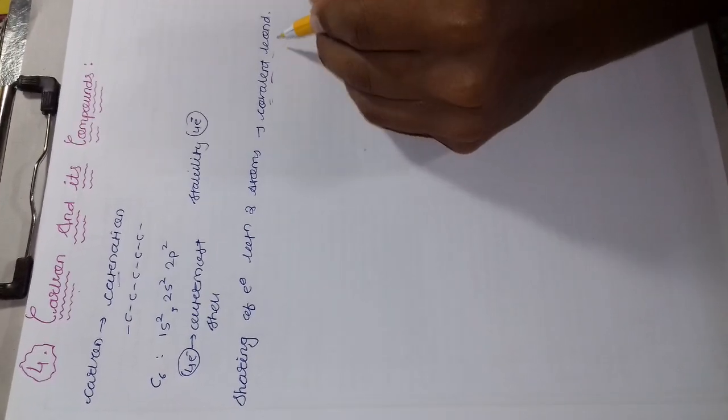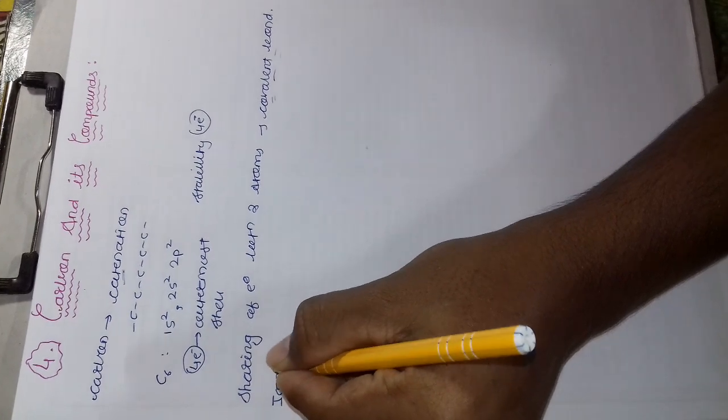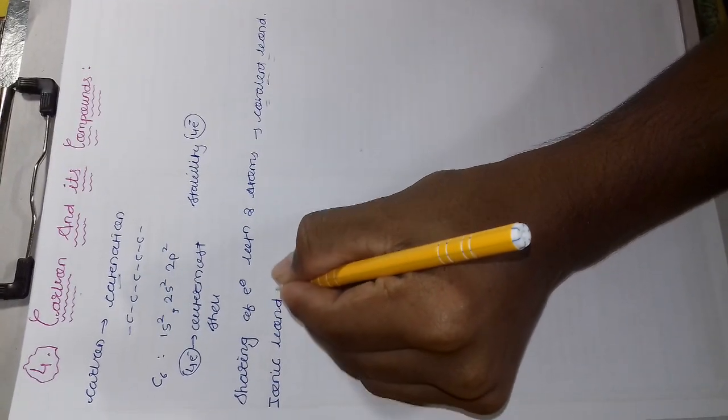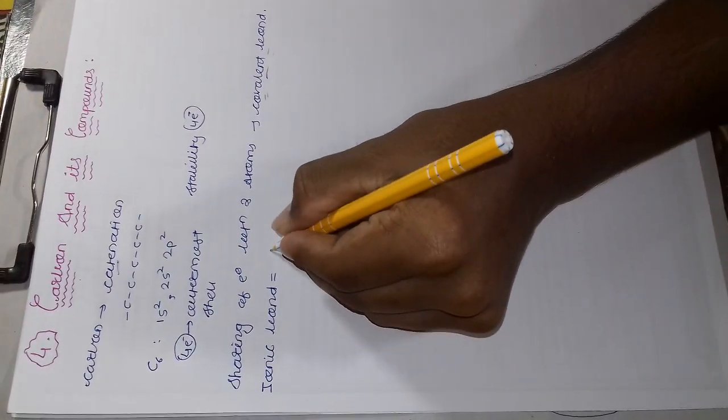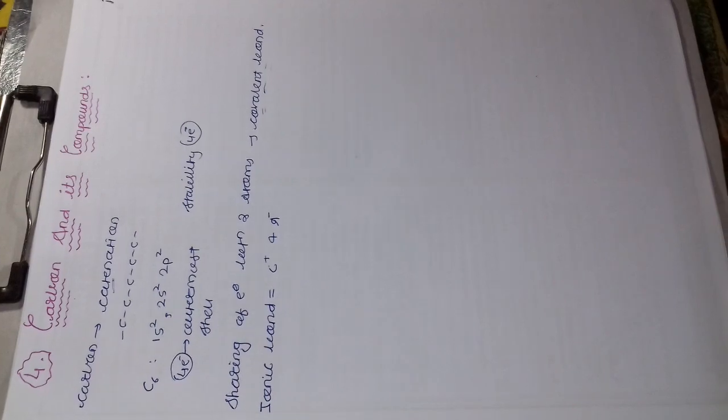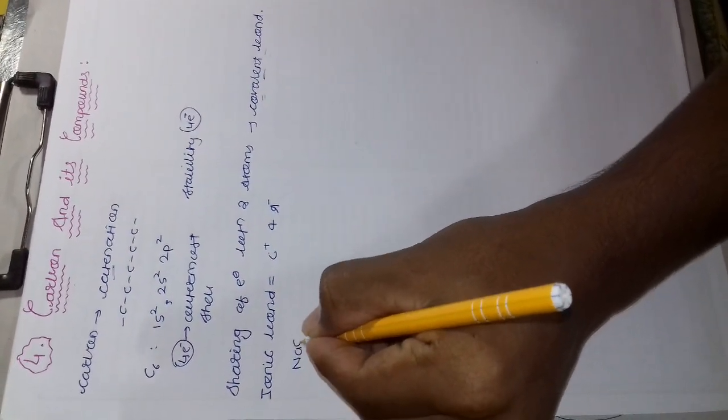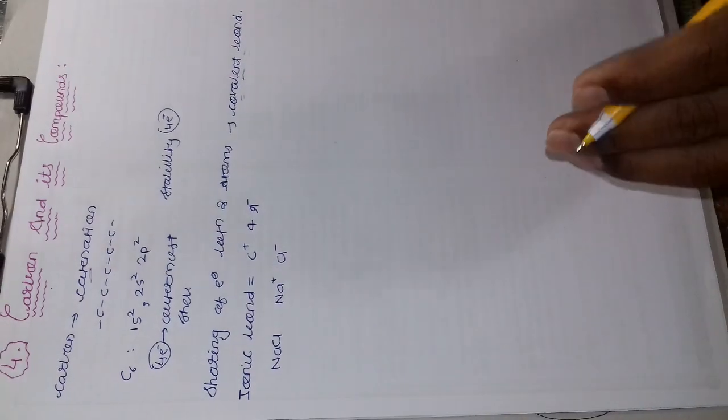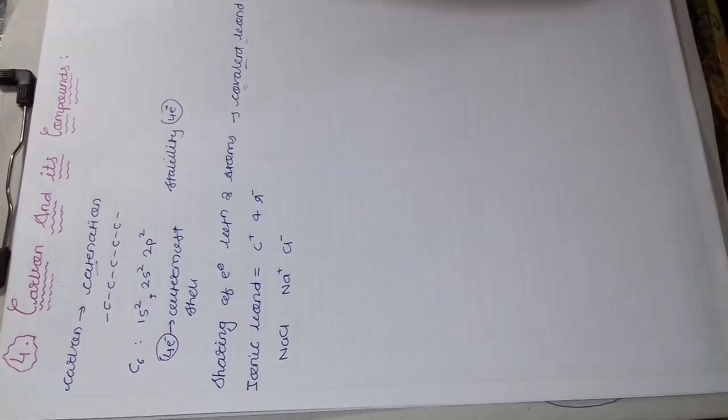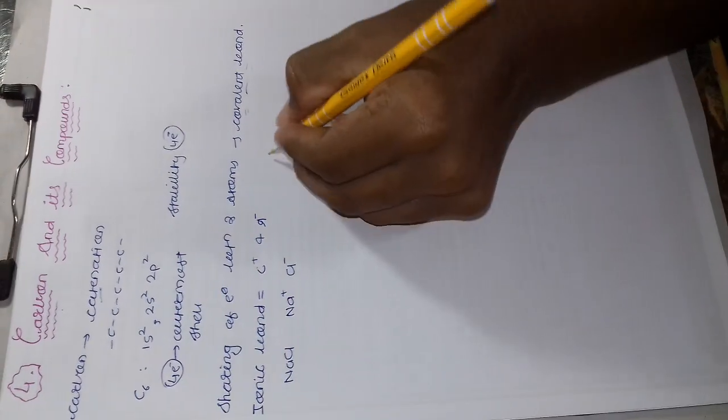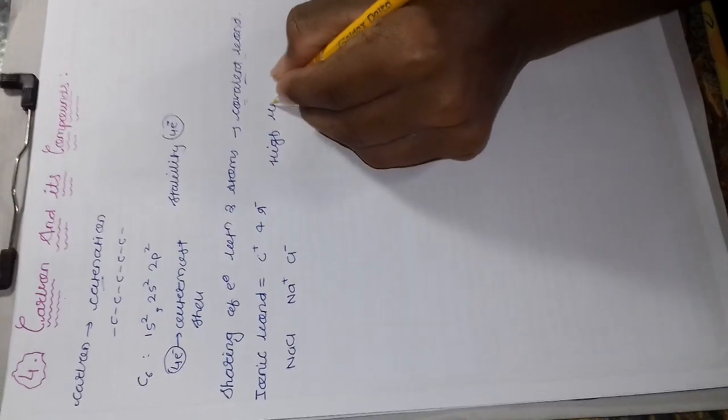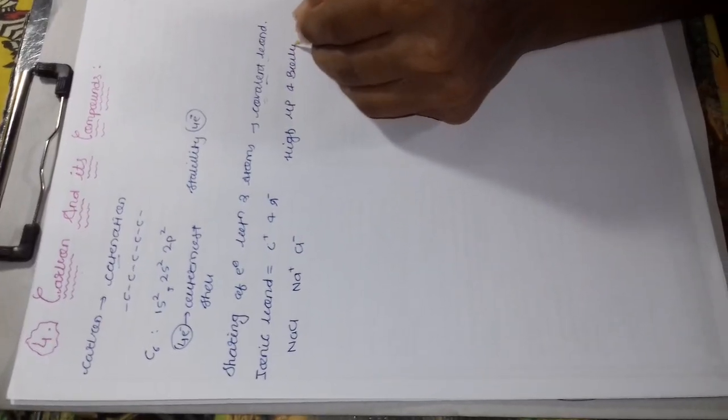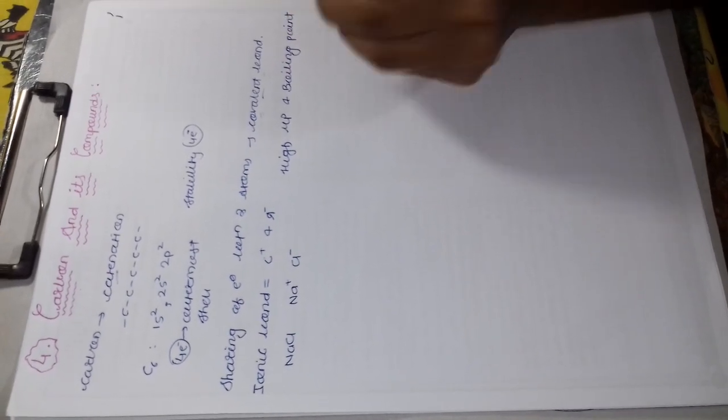With this covalent bond, our topic also includes ionic bond. The ionic bonds are formed by ions, positive cations and negative anions. The best example of ionic bonds would be NaCl, which is formed by Na plus sodium cation and Cl minus chloride anion. The ionic bond has high melting point and high boiling point.